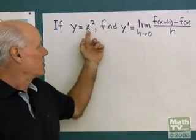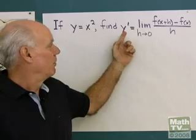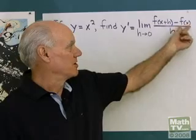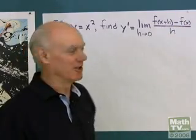All right, I have y is equal to x squared, and I want to find the derivative of y using this definition for the derivative. The limit as h goes to 0, f of x plus h minus f of x over h. So let's do that.